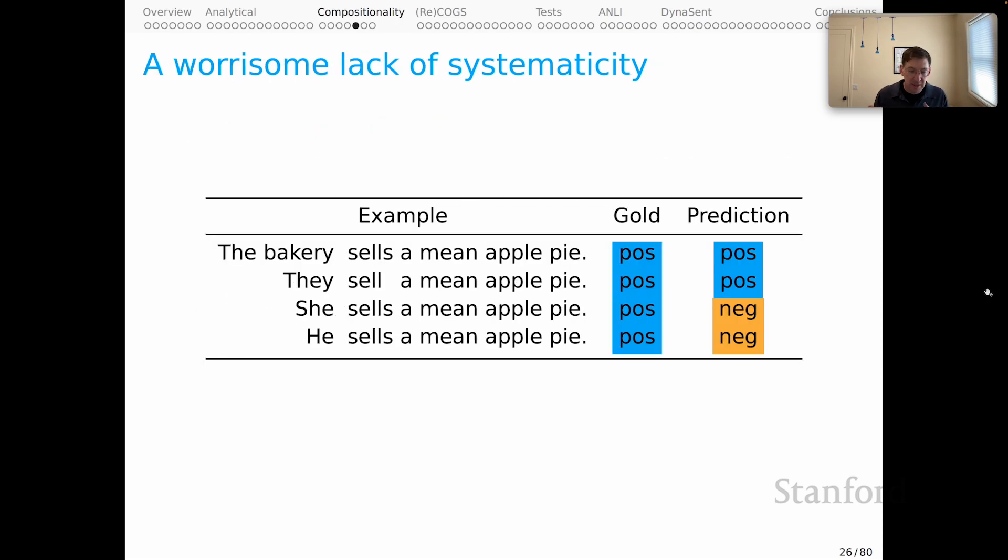Systematicity is a powerful idea for thinking about the intuition behind many of the behavioral tests that we run, especially the hypothesis-driven challenge tests that we run. Because very often when we express concerns about systems, they are concerns that are grounded in a certain lack of systematicity. And here's a brief example to illustrate this.